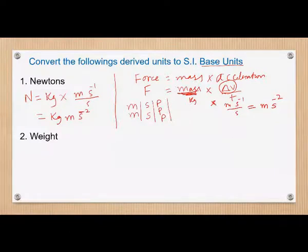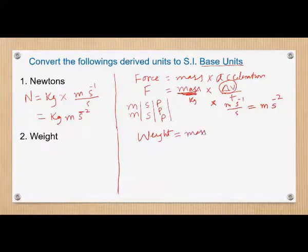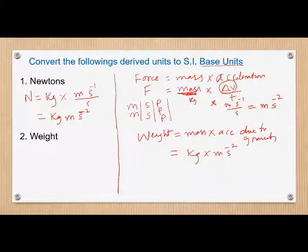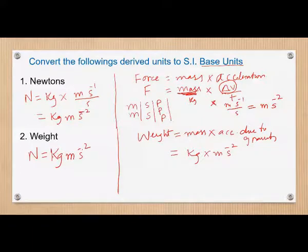Now let's find the unit for weight using the word equation: weight equals mass times acceleration due to gravity. Mass is in kilograms, and acceleration due to gravity is in meters per second squared. So weight has the unit newtons, and in base units: kg·m·s⁻². This is how we do the conversion.